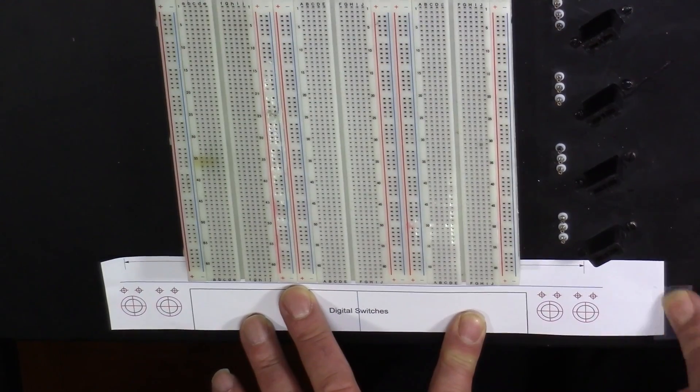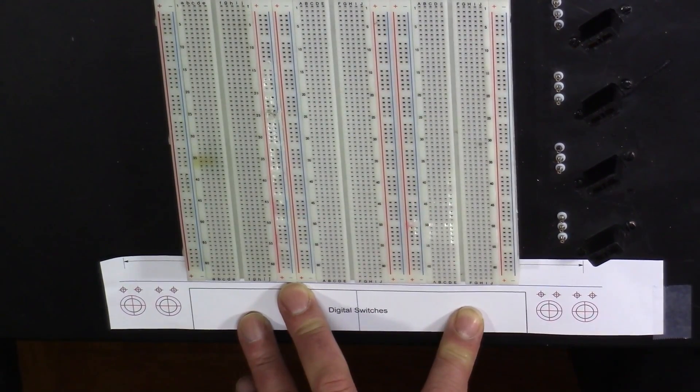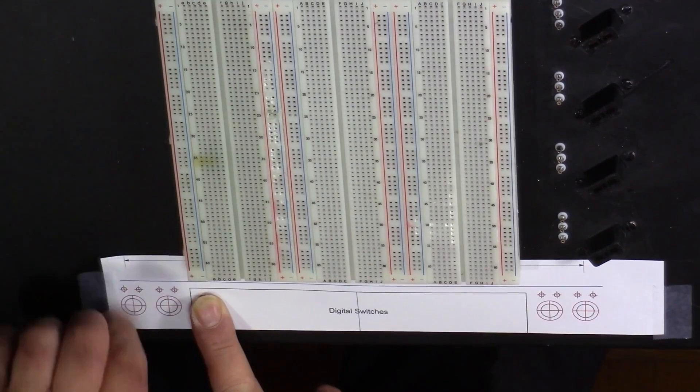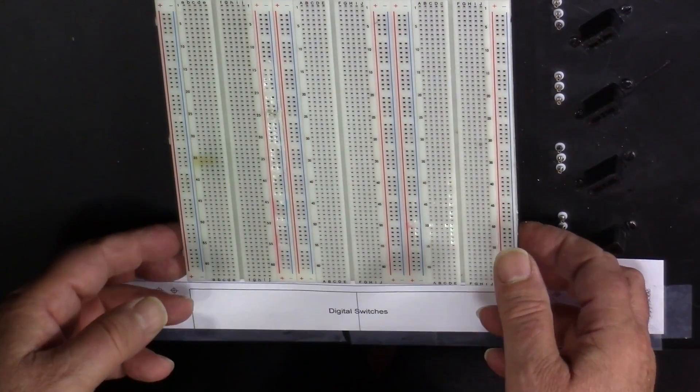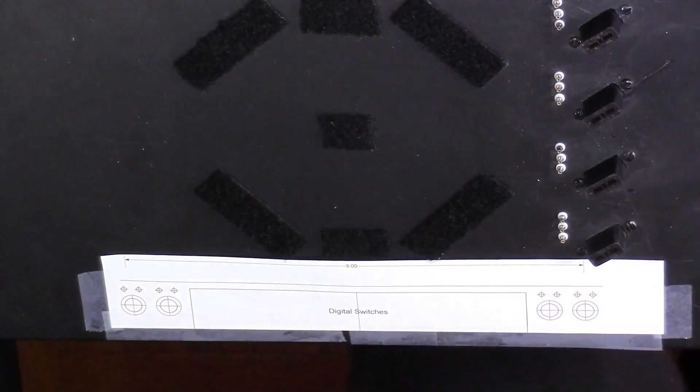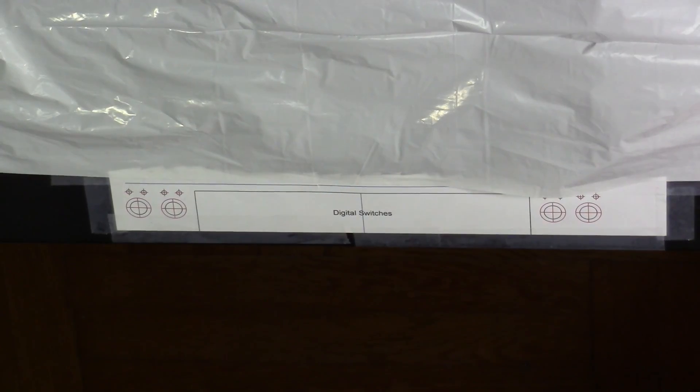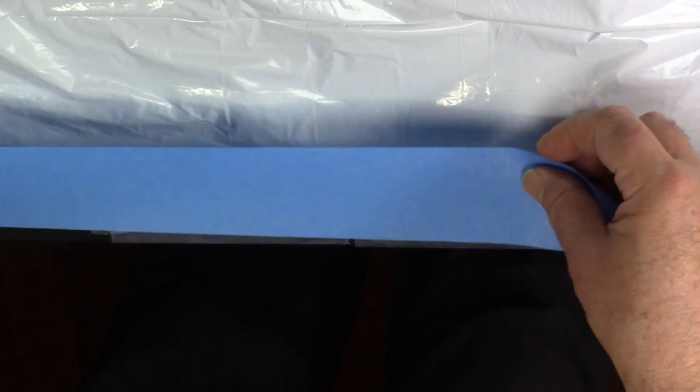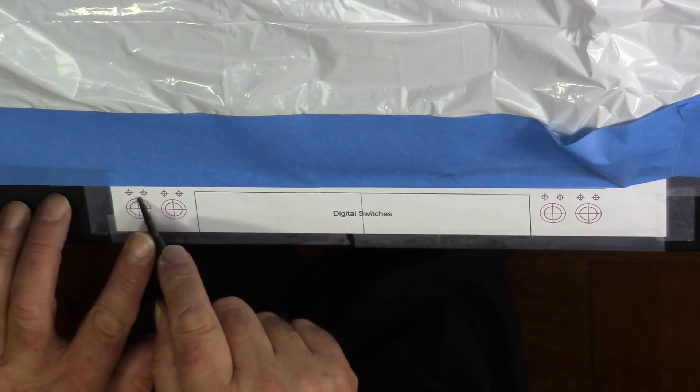Having printed off a template for center punching, I now need to tape it to the upper panel. Let me remove everything that I need to protect and cover it up, mask it off. I don't want metal shards fitting into everything. And now let's center punch all of these holes.